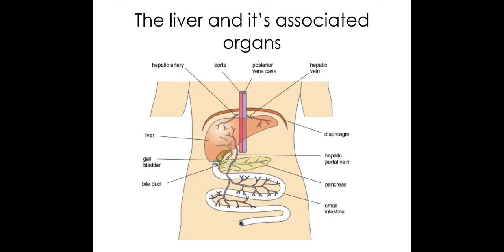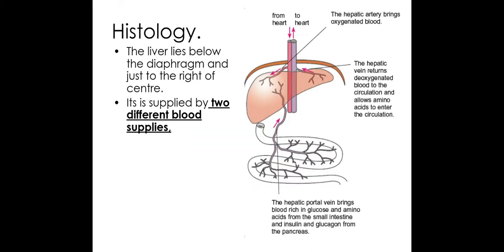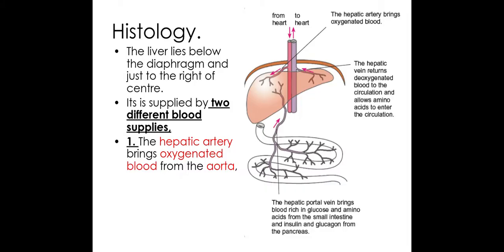The liver is found just below the diaphragm in your abdomen and it actually has two blood supplies that feed it. The first blood supply is from the hepatic artery, which brings oxygenated blood from the aorta. This is important because your liver is going to need oxygen for processes such as aerobic respiration to generate ATP.